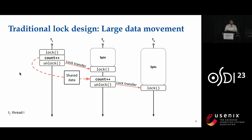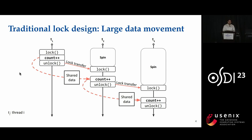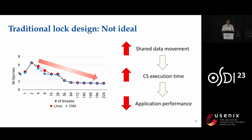When thread two calls the unlock API, it transfers the lock to thread three. When thread three wants to execute its critical section, the shared data has to move from thread two to thread three. Since the shared data movement is non-negligible in modern hardware, it causes an increase in critical section execution time. Since critical section execution is done sequentially, this increase in the sequential part negatively impacts application performance according to Amdahl's law. Hence, traditional lock designs fail to provide locality for shared data and are not ideal in terms of performance.